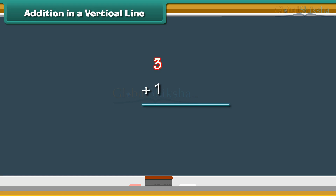What is three plus one? Write the two numbers one below the other. Draw three vertical lines next to three and one vertical line next to one. Count the vertical lines: one, two, three, four. Three plus one is four.